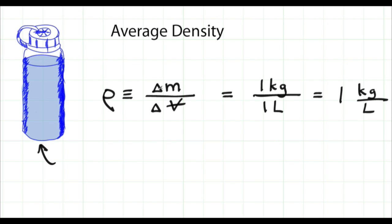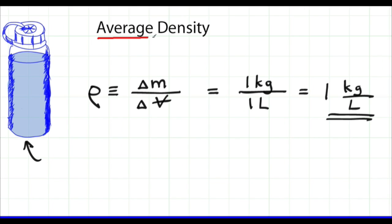Average density is the amount of mass divided by amount of volume. In the case of water, a useful fact to remember is that water has a density at room conditions of very nearly one kilogram per liter. In many problems, average density is all we need to know.